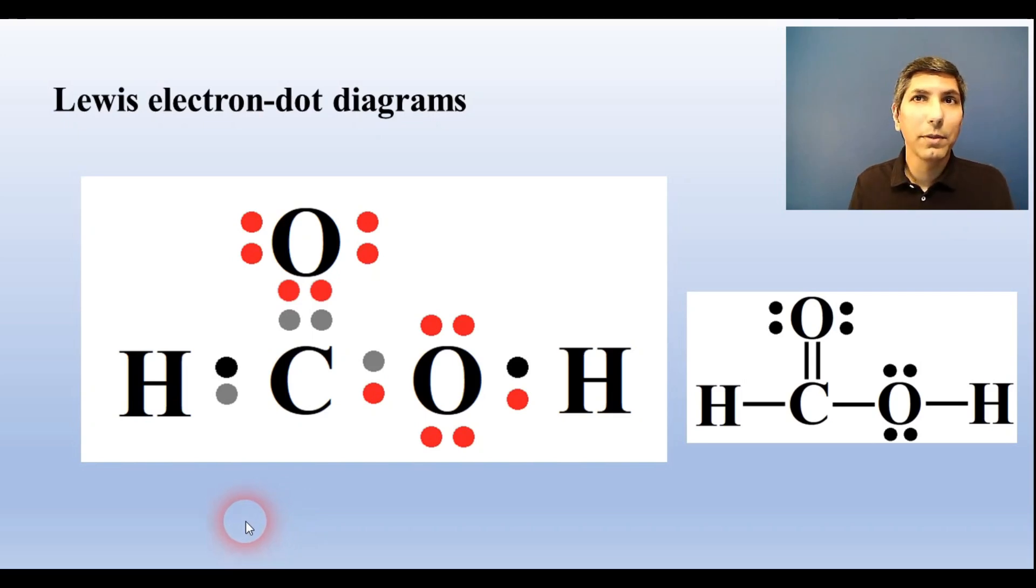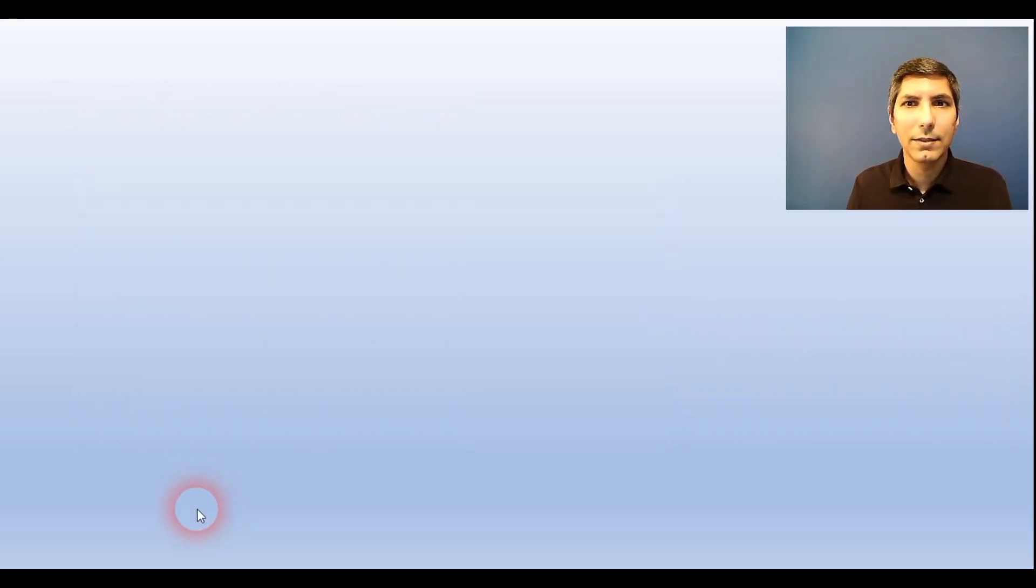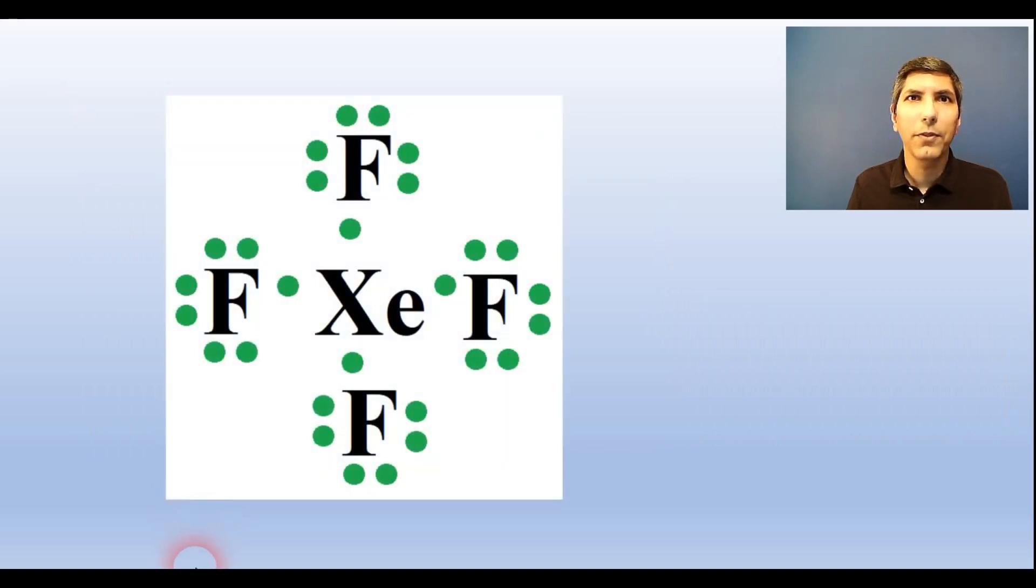Normally molecules are most stable when their atoms all have eight valence electrons. Of course, hydrogen can only hold two and boron tends to be stable with six. Sometimes the only way to make a Lewis structure work is to give the central atom more than eight valence electrons. When that happens, it's called an expanded octet, like in xenon tetrafluoride here. When we put the eight dots around xenon, we try one, two, three, four, and we find that we run out of room for xenon's last four dots.